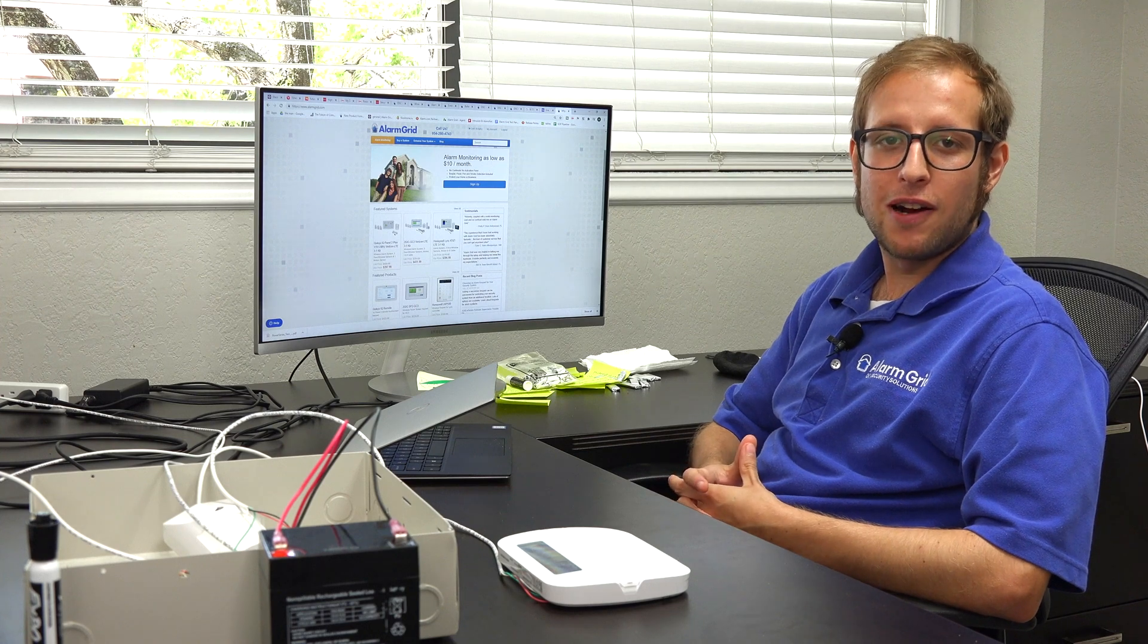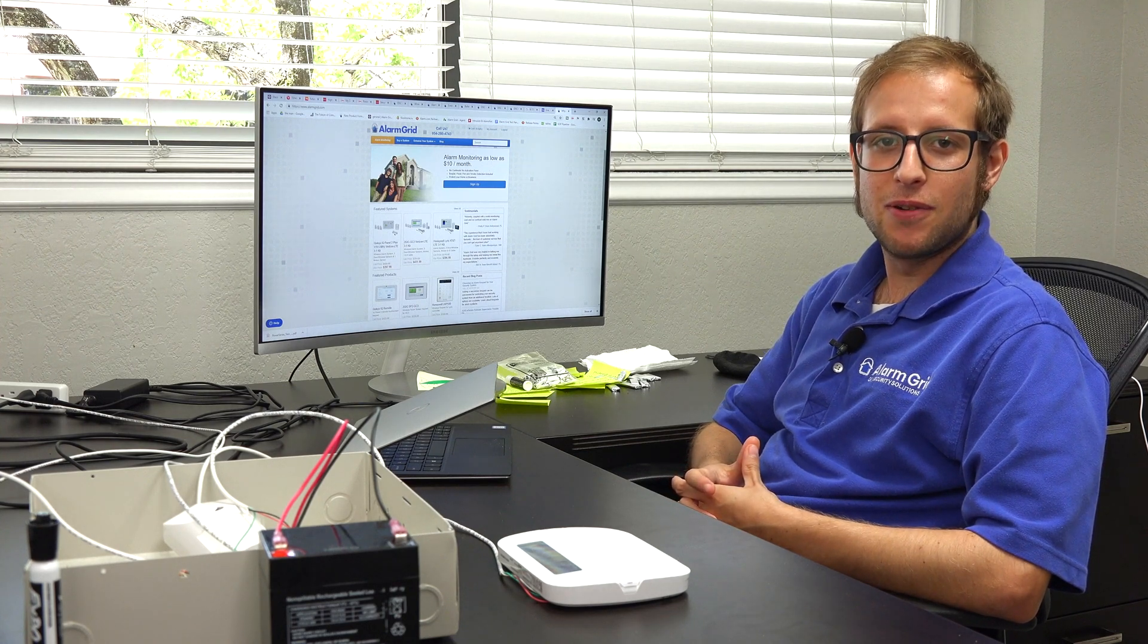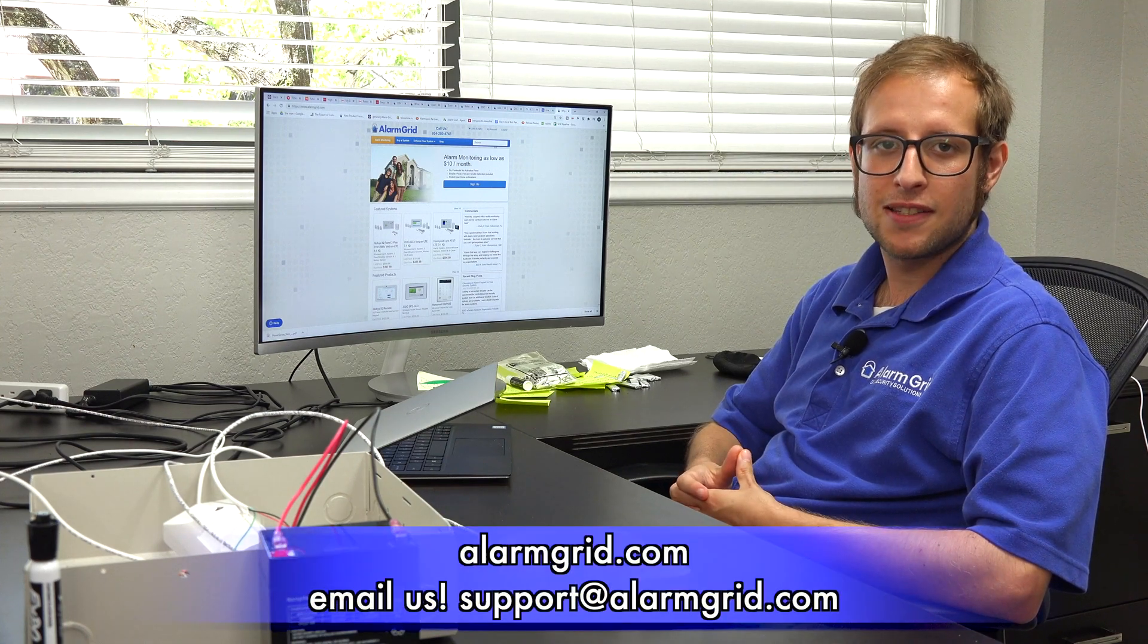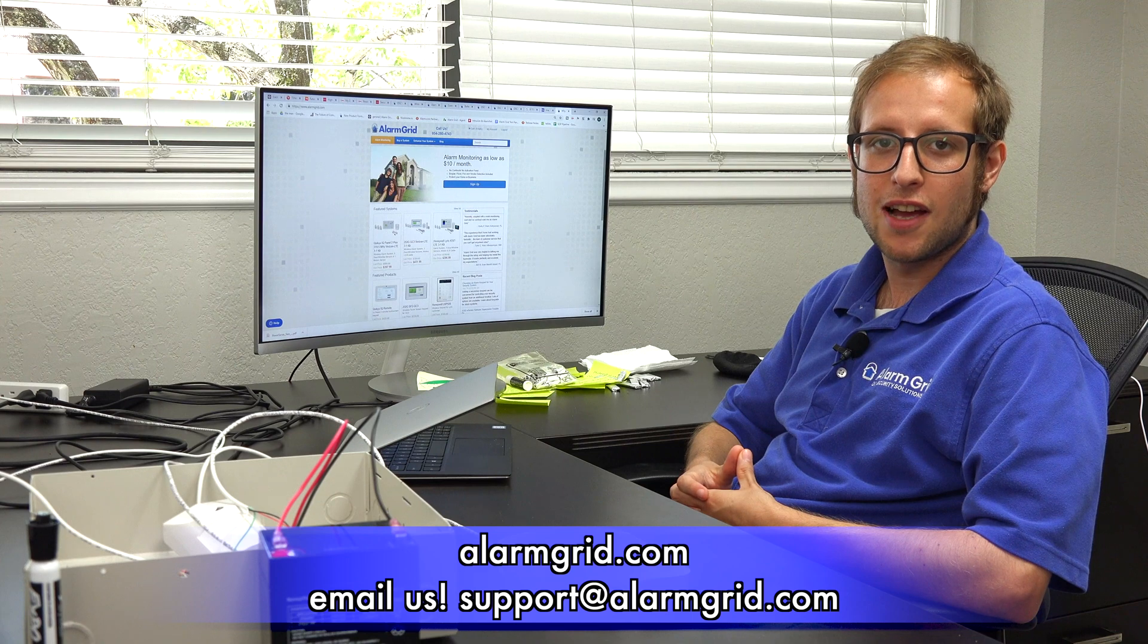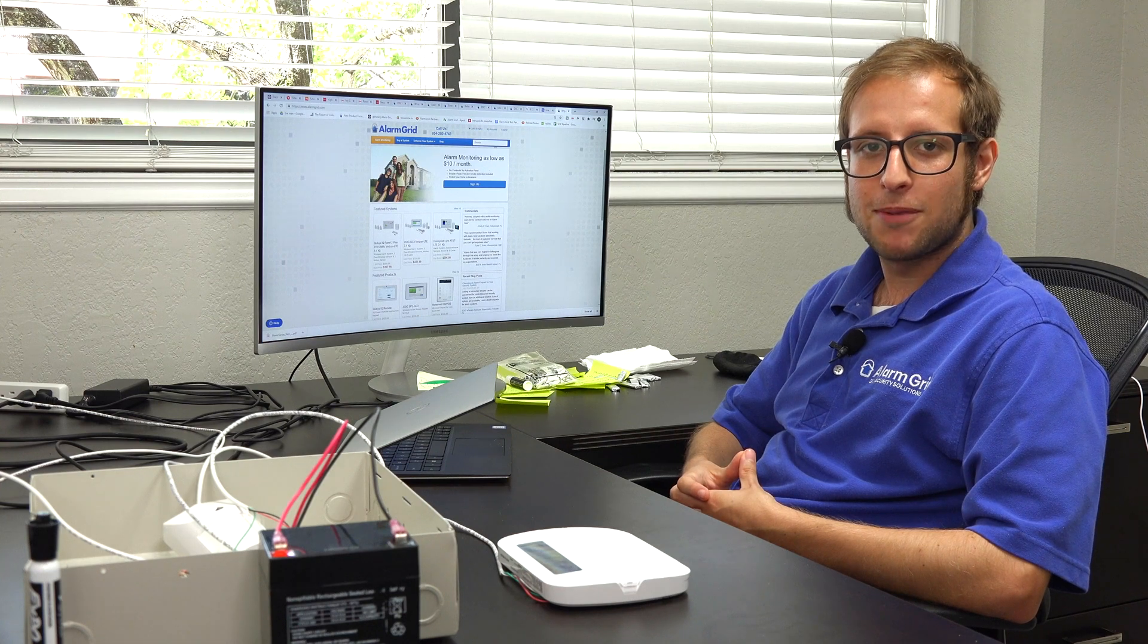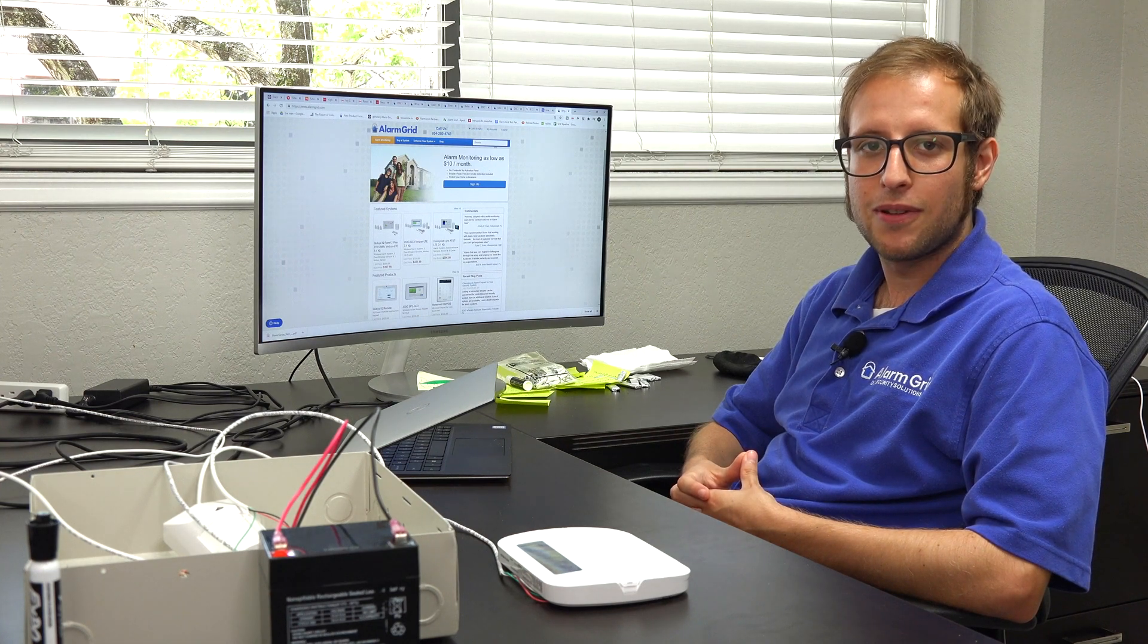So that's how you would add a hardwired zone to a DSC Power Series Neo security system. If you have any questions about the DSC Power Series Neo or about alarm monitoring in general, send an email to support at alarmgrid.com. And if you enjoyed this video, give it a thumbs up below to like the video. And remember to subscribe to our channel for updates on future videos. Hope you enjoyed the video. Thank you.